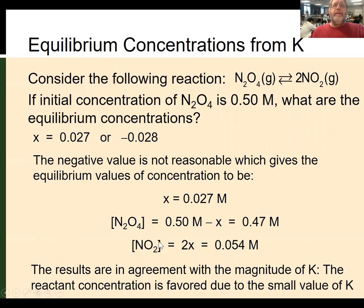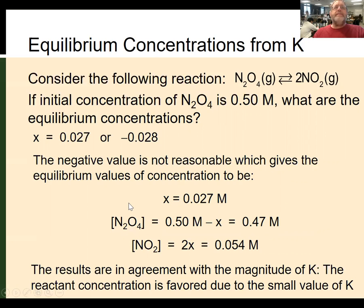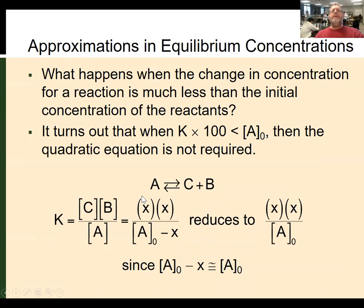The results are in agreement with the magnitude of K. This reaction is reactant-favored due to the small value of K. Remember, K is less than 1, so we would expect to have more reactants than products.